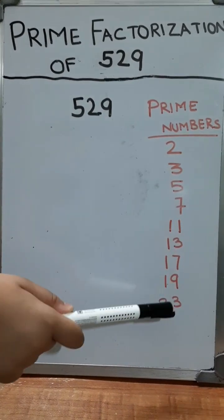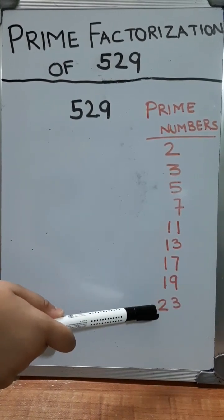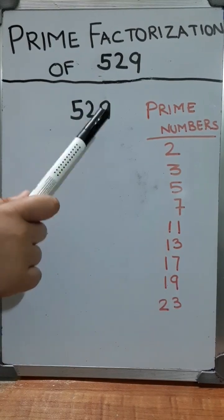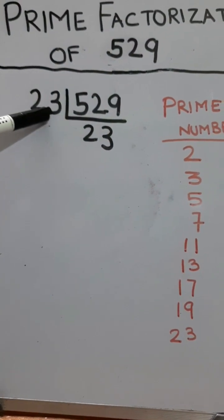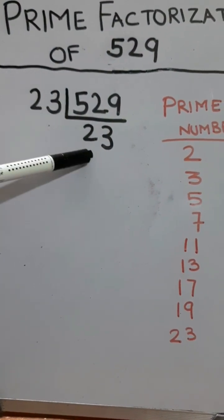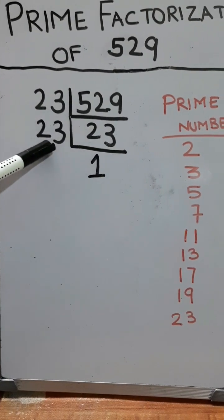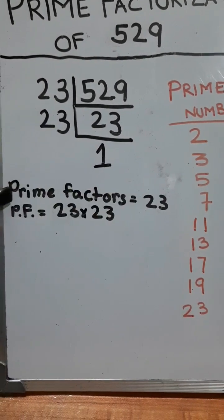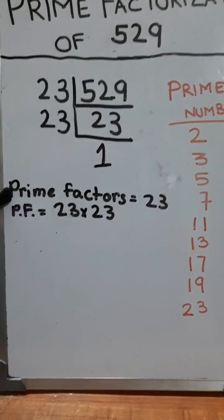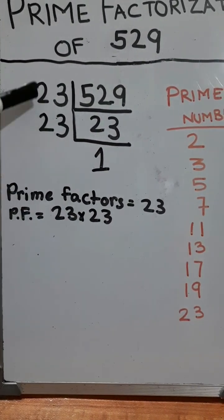The next prime number that divides 529 is 23. 529 divided by 23 is 23, and 23 divided by 23 is 1. So the prime factor is 23, and the prime factorization of 529 is 23 × 23.